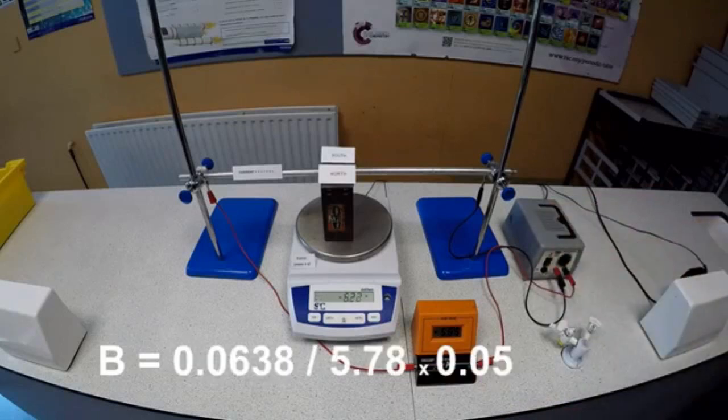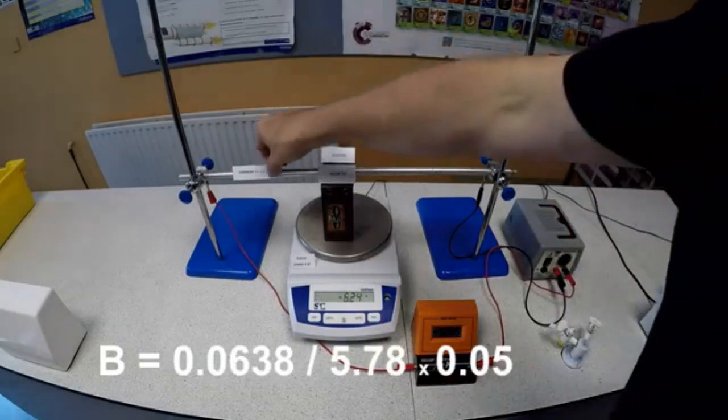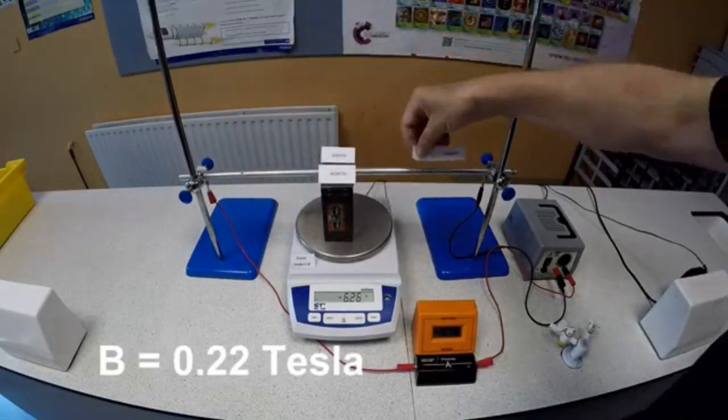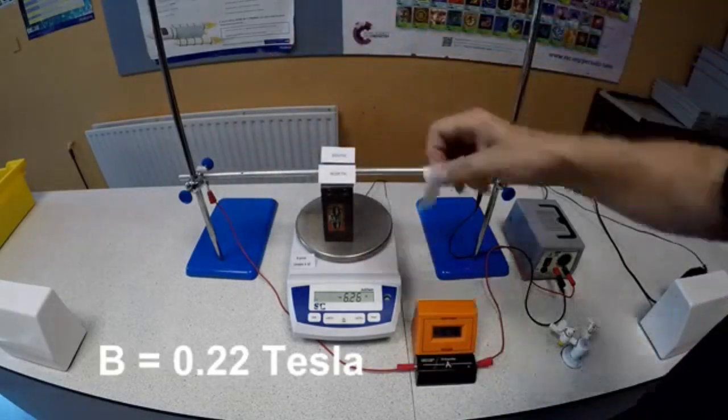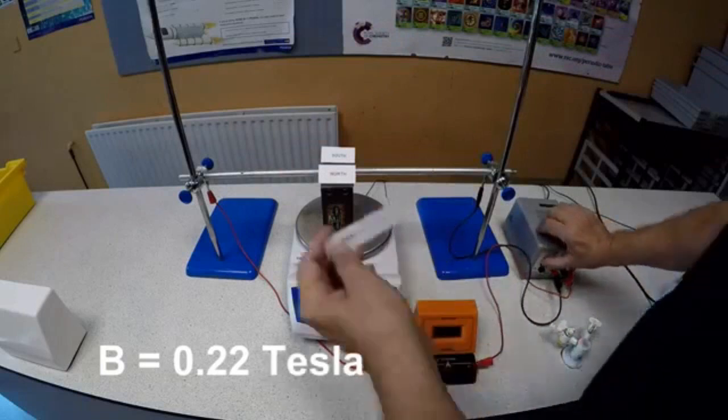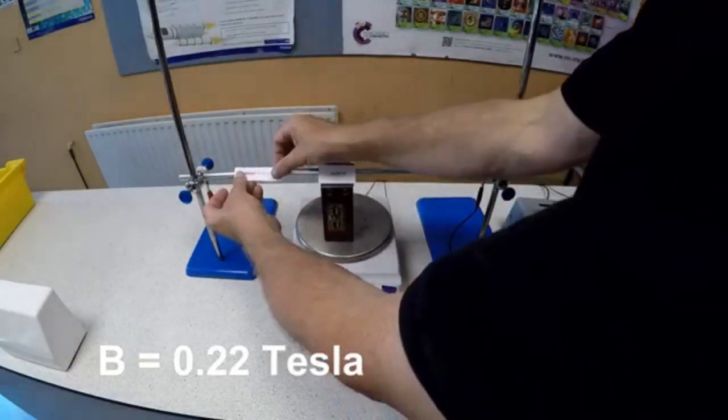There is often confusion between the symbols I and L in this formula, so be careful. It turns out that the strength of this magnet, a fairly typical laboratory magnet, comes in at about 0.22 Tesla.